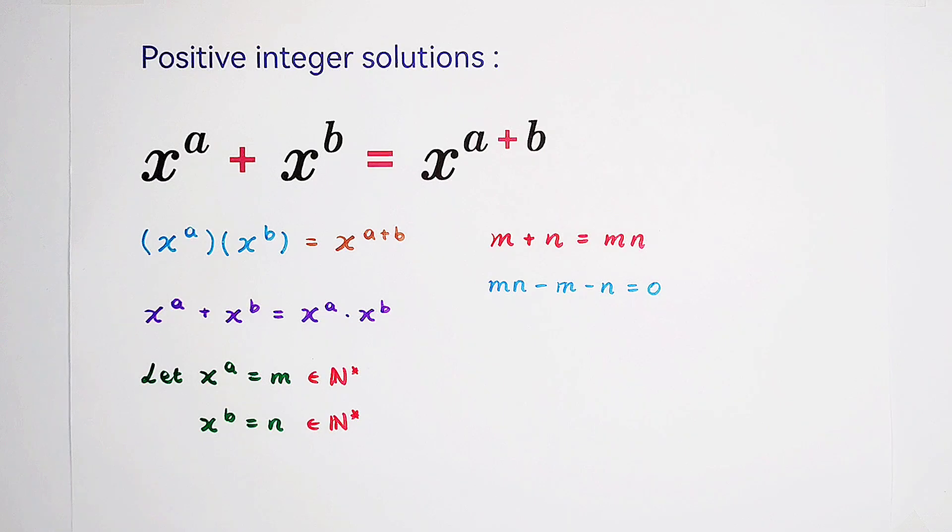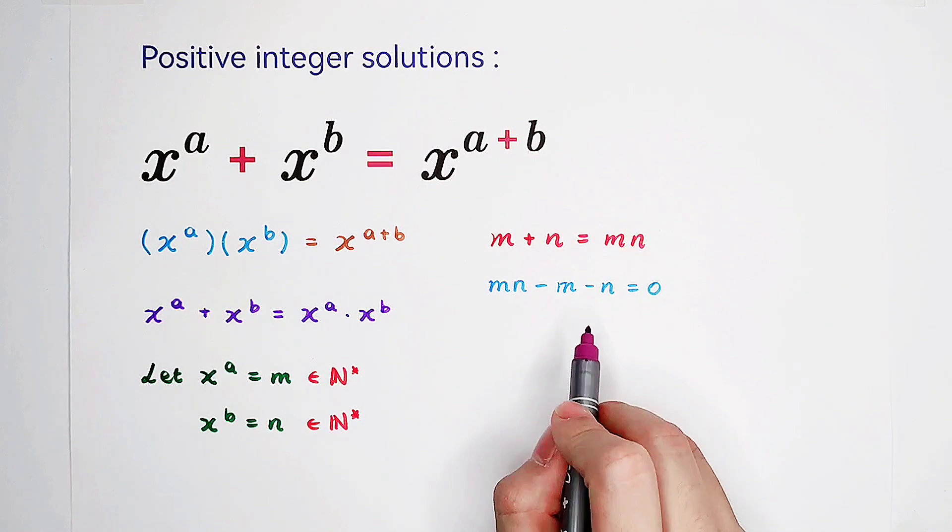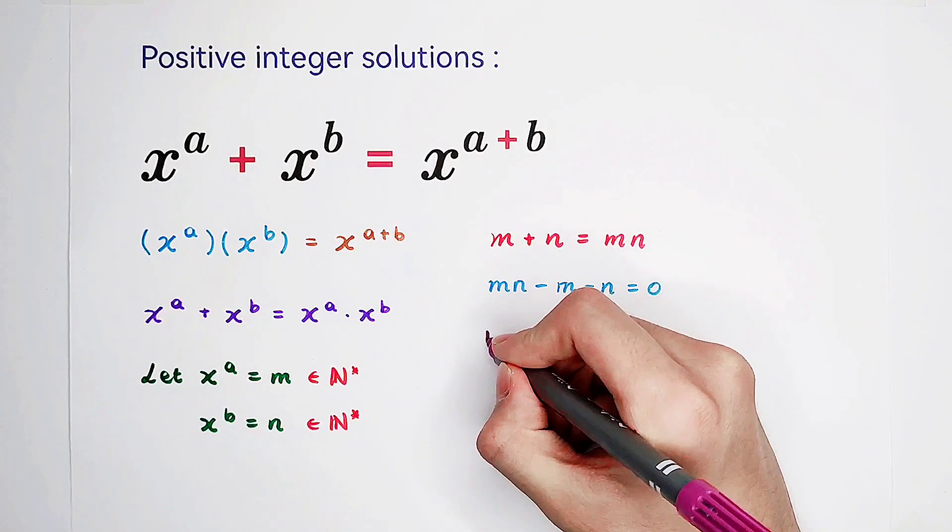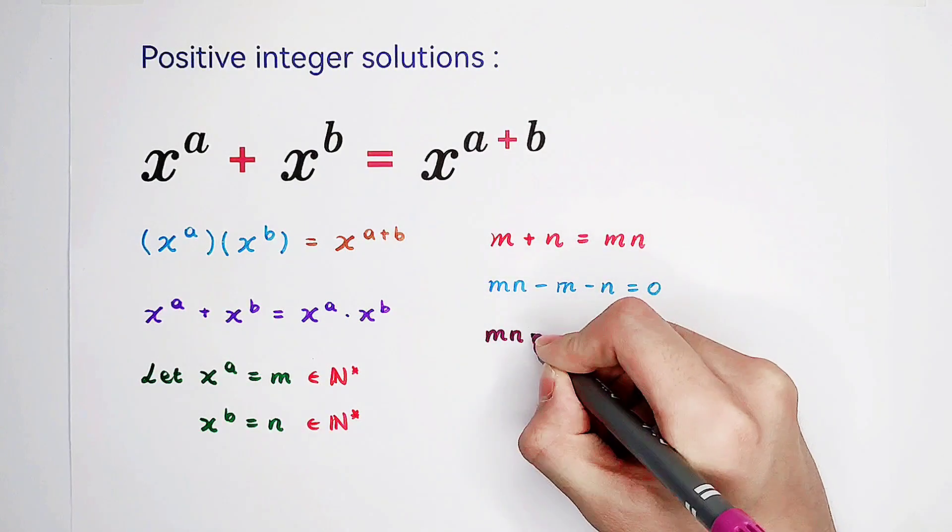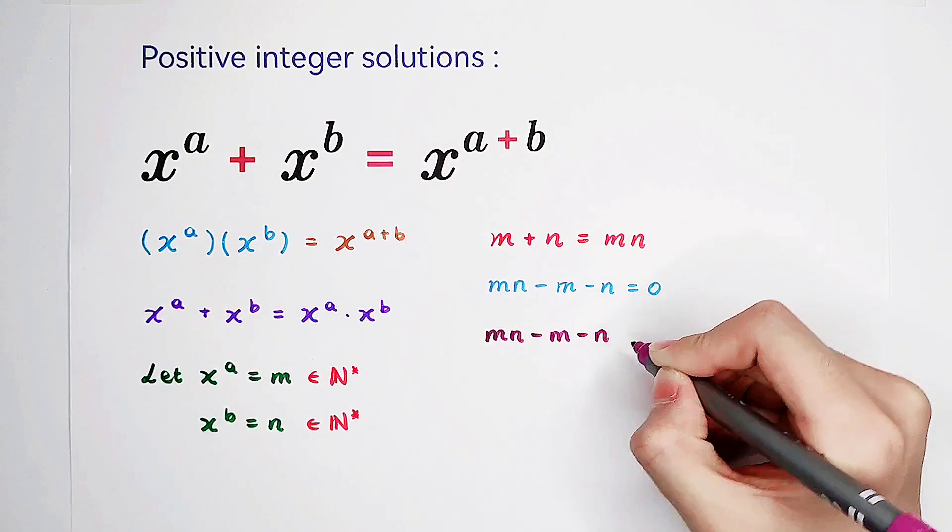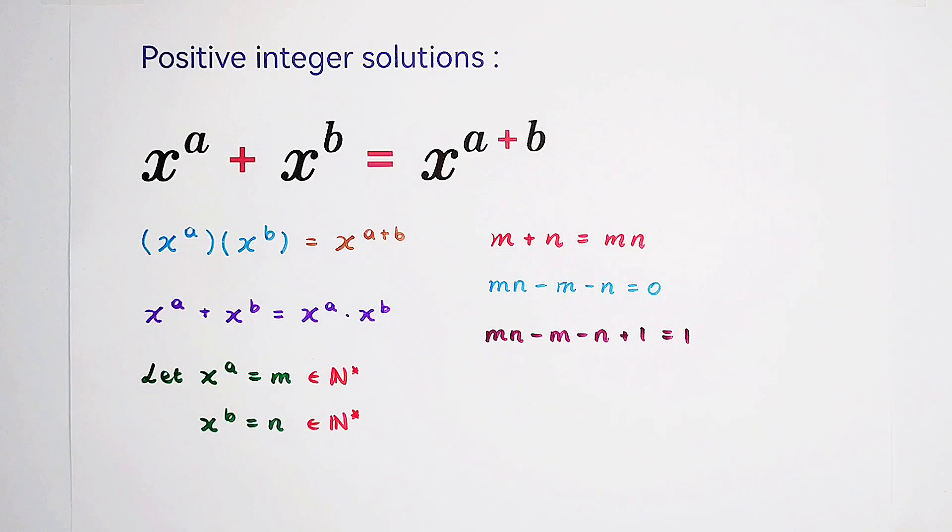Because we have 0 on the right-hand side, usually we have to add a number. Negative m is minus 1 times m. Negative n is minus 1 times n. So now, if we add minus 1 times minus 1, add 1 on both sides,